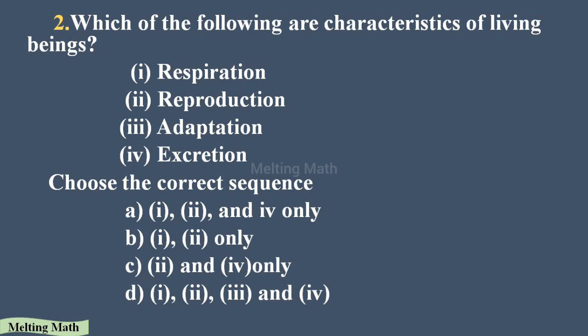Question two: which of the following are characteristics of living beings? The options are respiration, reproduction, adaptation, and excretion. We have to choose the correct sequence — that is, the correct order. Respiration is first, reproduction second, adaptation third, and excretion fourth. This is in the correct order, so option D is the correct answer.